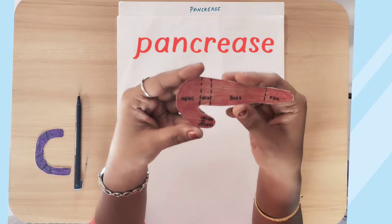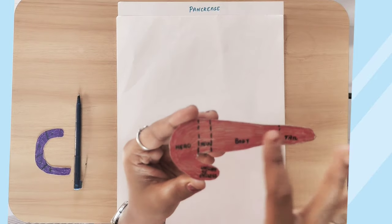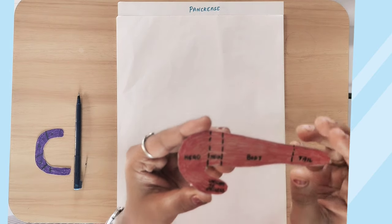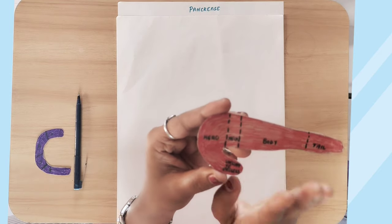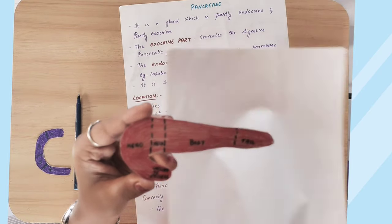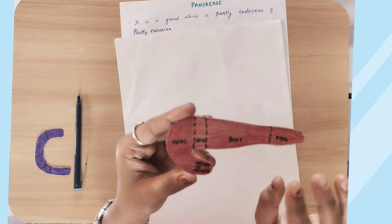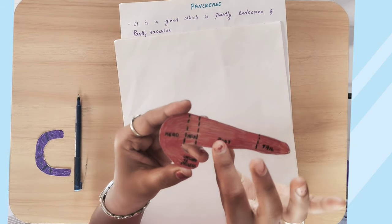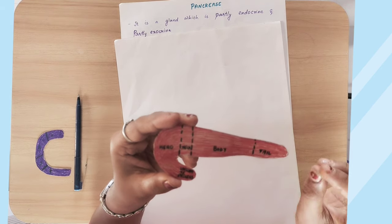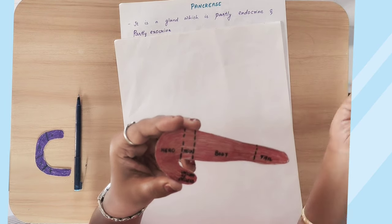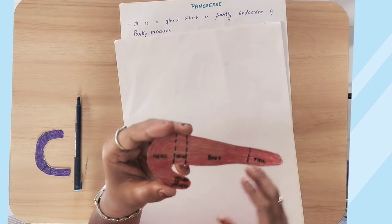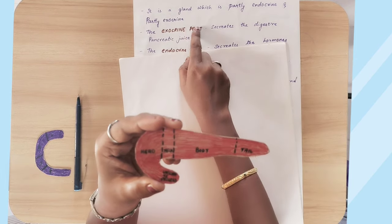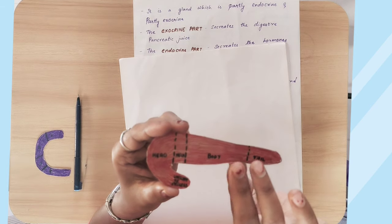The pancreas is a J-shaped organ and a gland — it secretes hormones and enzymes. The pancreas is special because it is partly endocrine and partly exocrine. The endocrine part secretes hormones into the bloodstream, while the exocrine part secretes digestive pancreatic enzymes to a particular site.